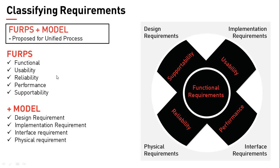When it comes to usability, it's more around how the system can be made usable and discoverable — non-functional requirements like human factors, consistency, documentation, and responsiveness fall here. Coming to reliability, they can again be subcategorized into non-functional requirements more related to the reliability of the system, like availability, failure handling, recoverability, stability, and accuracy.